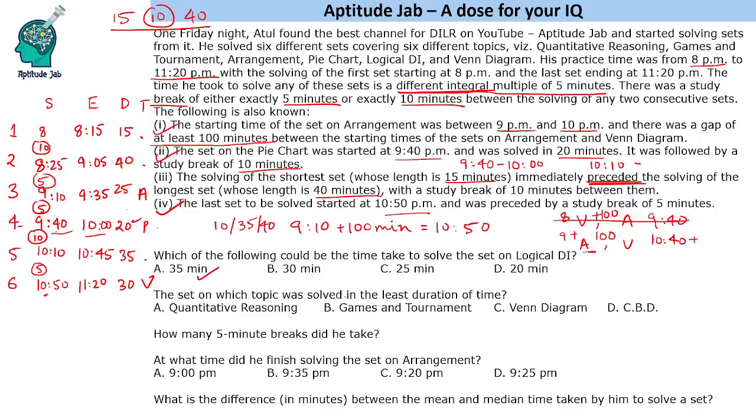The set on which topic was solved in the least duration of time. And we cannot determine it because it could be any of these 3 topics. So 3 remaining topics were games and tournaments, quantitative reasoning, games and tournaments and logical DI we did not find out.